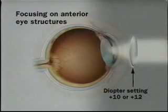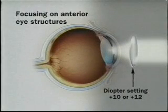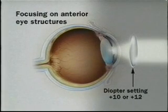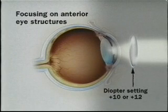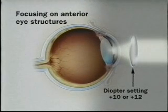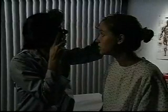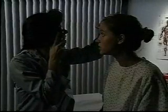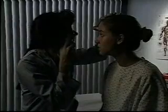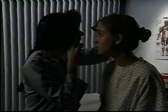To focus on more anterior structures, such as opacities in the vitreous or lens, change the diopter on the ophthalmoscope to more positive numbers, such as plus 10 or plus 12. Repeat the ophthalmoscopic examination on the patient's right eye using your right hand and right eye.